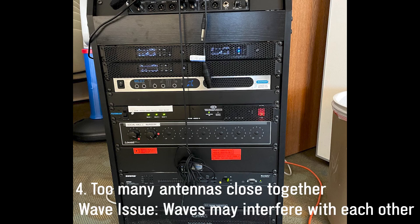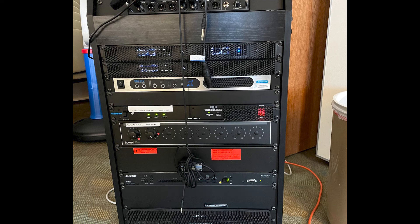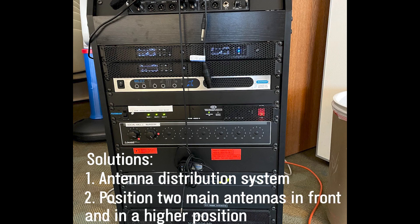And finally, there is no antenna distribution, which means there are six receiver antennas all in close proximity to each other, which increases the likelihood of interference and some other problems. To solve these issues, we added an antenna distribution system to reduce the likelihood of interference, and we placed the remaining two receiving antennas in the front of the rack and in a higher position. This ensures that we have a sightline without people or the rack itself getting in the way.